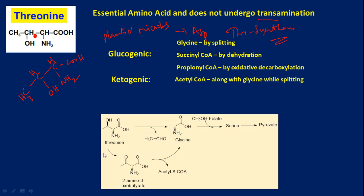Threonine can be converted to 2-amino-3-oxobutyrate because the OH group gets oxidized, and it is then degraded to give acetaldehyde and glycine. So glycine can be biosynthesized from threonine in both ways. Alternatively, if folate — CH2OH-loaded folate — is added, it gives serine, and serine can be converted to pyruvate, as we have seen in the previous slides.